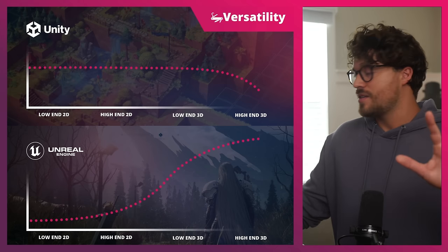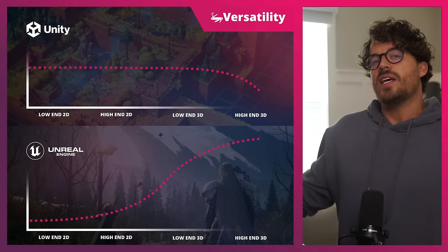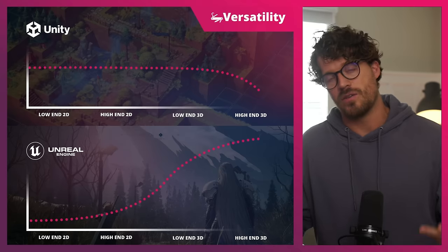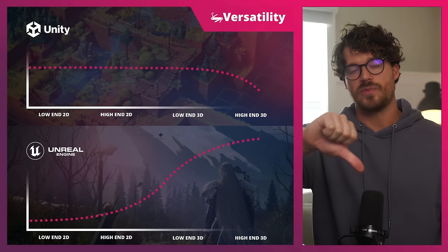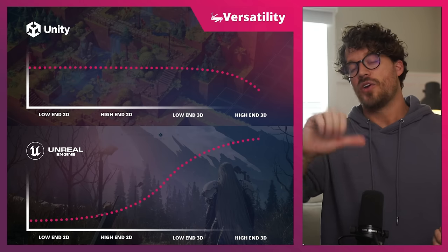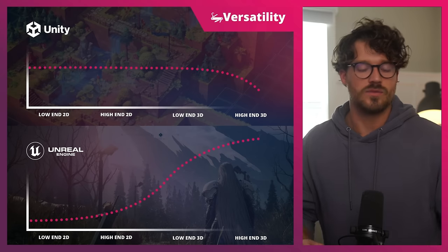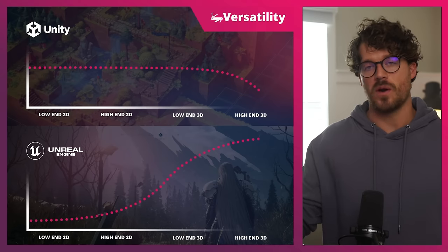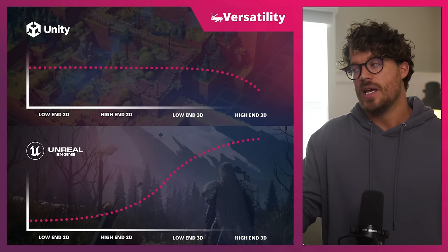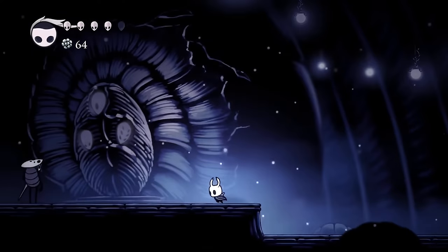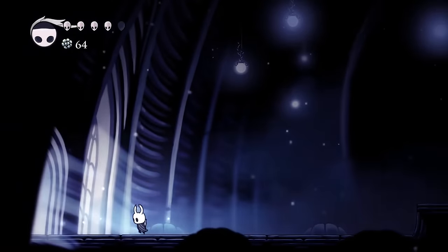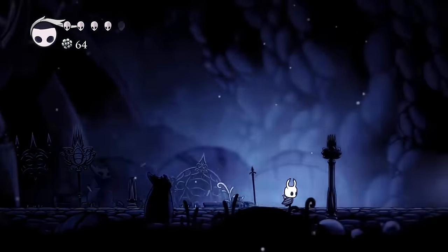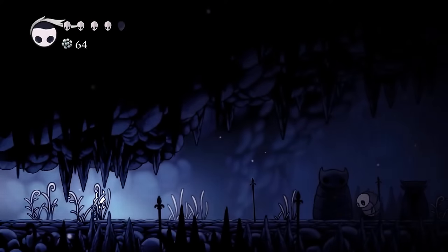To distill this: Unity is good across the board for low-end 2D, high-end 2D, and low-end 3D. The moment you want high-end 3D with Unity, it falls short — though HDRP is improving that. Unreal is focused on high-end 3D games — that's what it's built for. Unity is more versatile overall across game styles and platforms; Unreal is the choice for high-end 3D.